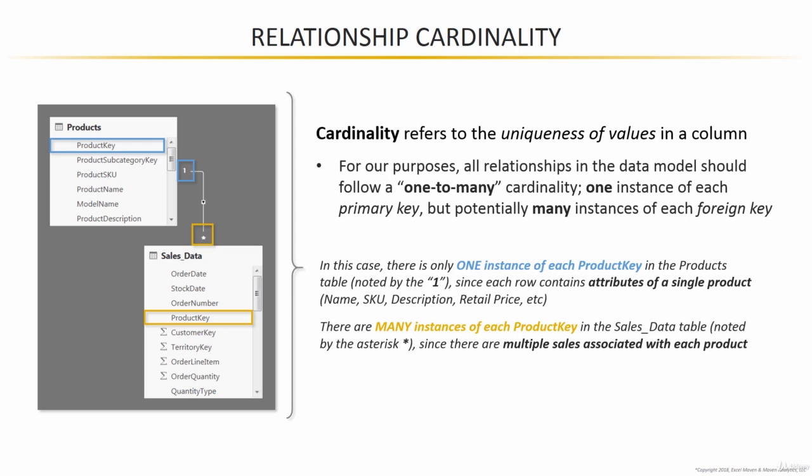The other types of cardinality we're trying to avoid are many-to-many or one-to-one, so it would be helpful to put a little case study together for each of those two to show you why we'll be using one-to-many relationships instead.